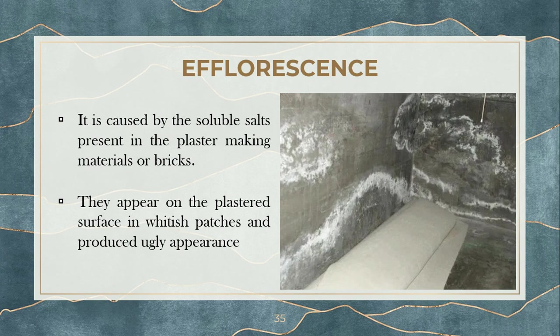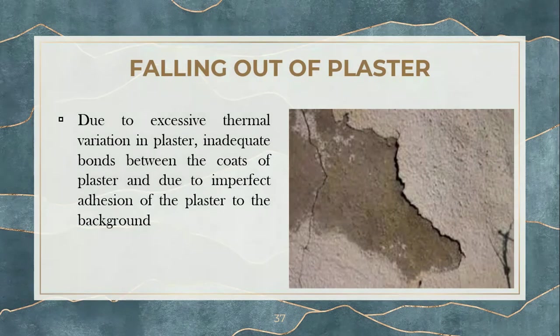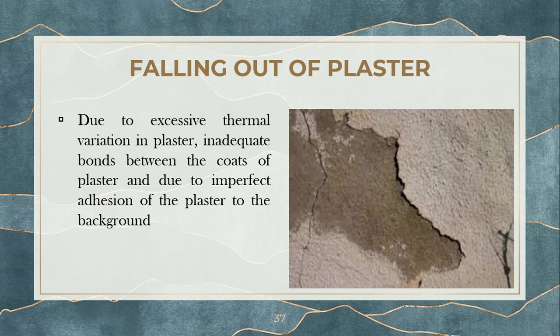The third kind of defect is blistering. Just as you can observe blisters on the human body — small boil-like projections coming out — the same takes place for plastering. Small patches in the form of boils come out of the plastered surface, caused due to improper plastering. The fourth defect is falling out of plaster. Since one of the key objectives of plastering is that the plaster should stick to the surface, if there is no proper bond between the surface and the plaster due to excessive climatic changes, that bond breaks down and plaster starts falling in small pieces — that is spalling or falling out of plaster.